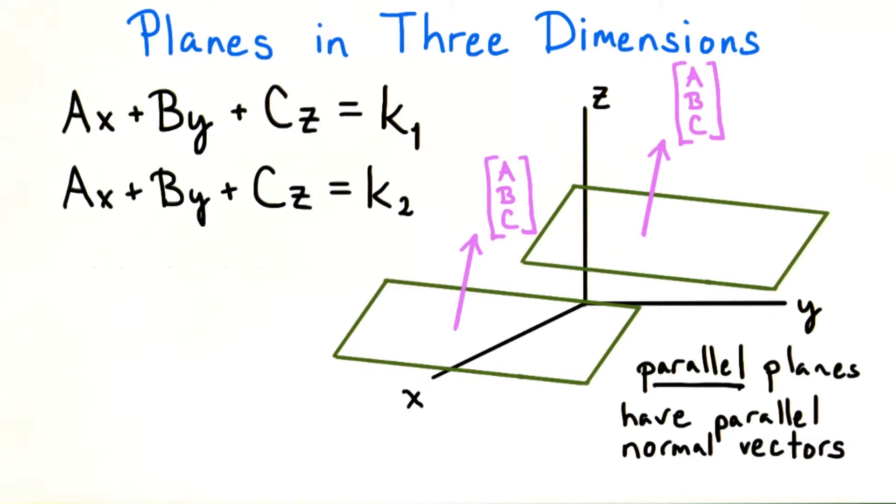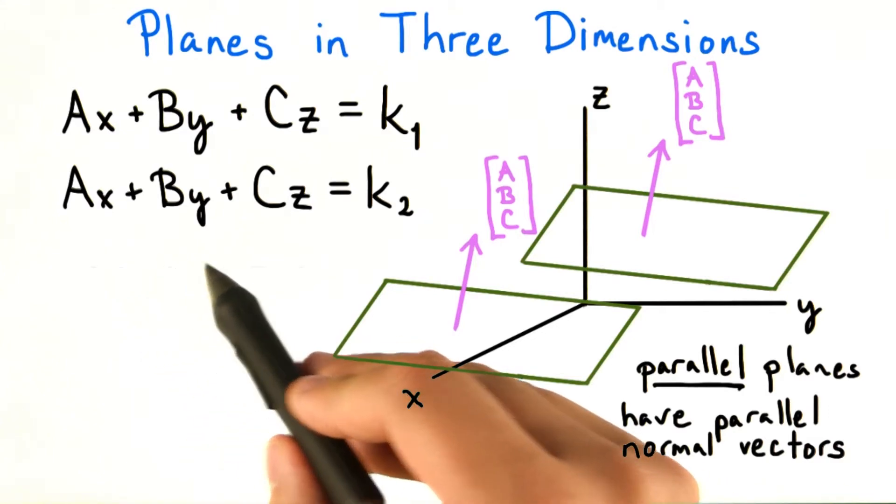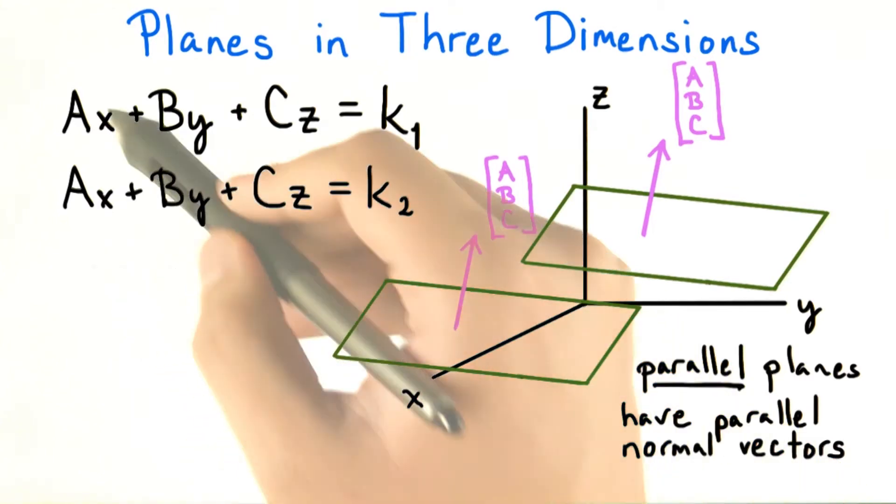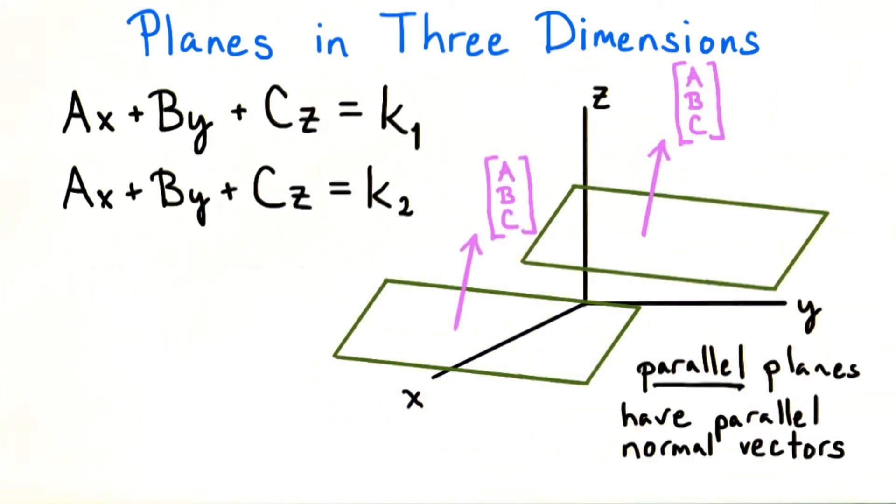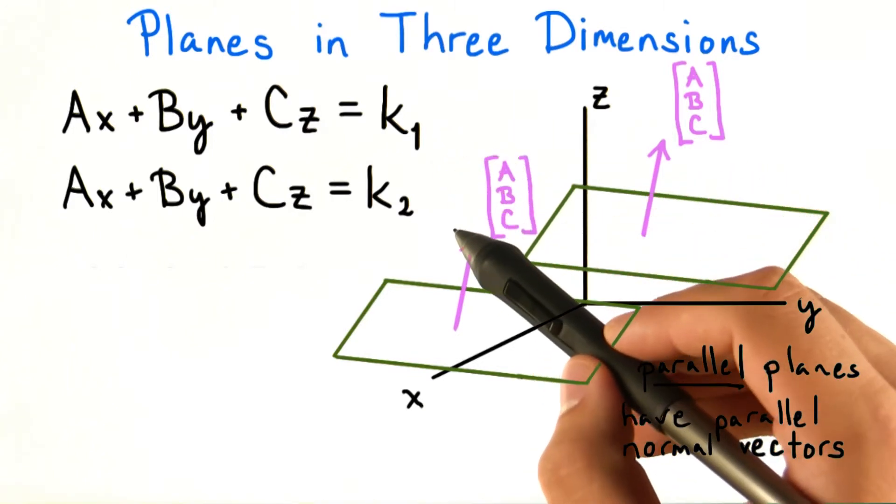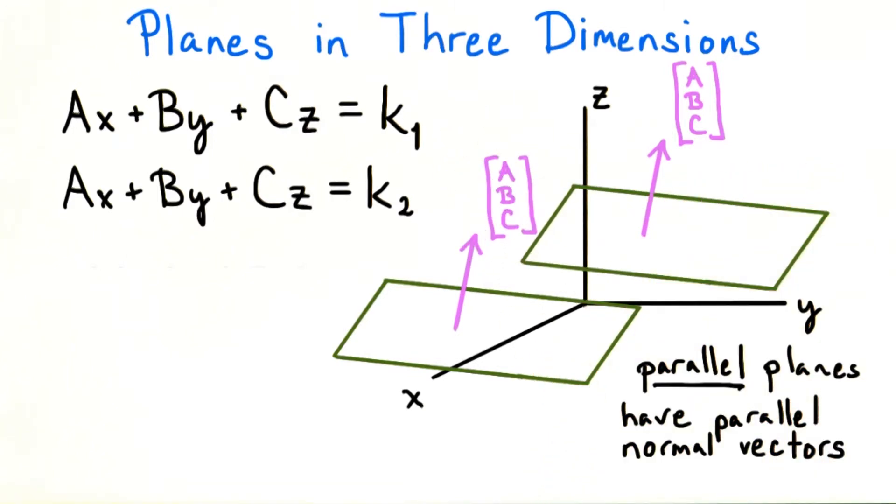Let's call two planes with parallel normal vectors parallel, since their faces are in the same direction. If we have two parallel planes, ax plus by plus cz equals k1 and ax plus by plus cz equals k2, the same coefficients in front of each variable but different constant terms, then that means any point xyz satisfying the first equation can't satisfy the second, and vice versa. So two different parallel planes do not intersect.